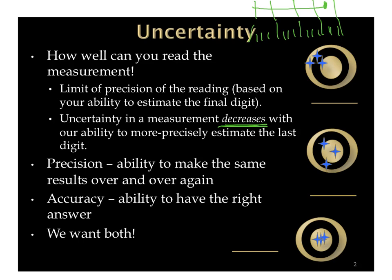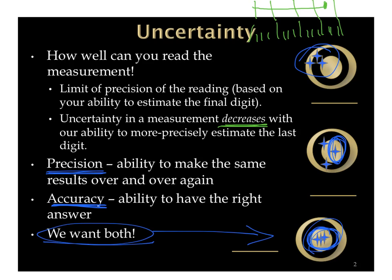We have what's called precision, which is the ability to do something over and over again. The examples shown here are both precise — they were able to replicate hitting the target multiple times. Accuracy is when you're able to hit the mark. What we want is both: to hit our mark and to hit it over and over again, showing both accuracy and precision.